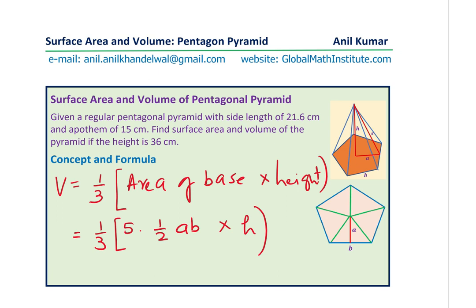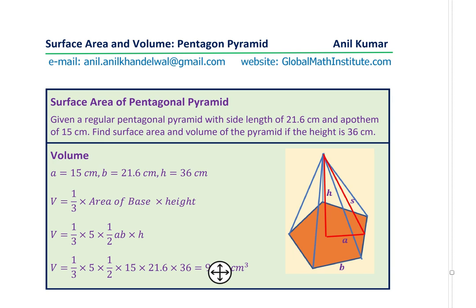Substituting the values given to us, we can easily find the solution. So the volume is, we know A is 15 centimeter, B is 21.6, H is 36 centimeter.